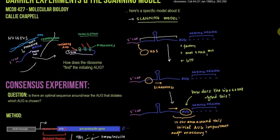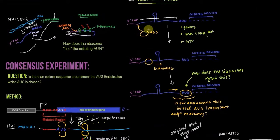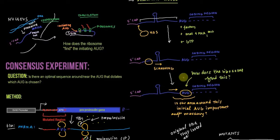And so they propose the scanning model. The 4DS subunit comes to the 5' cap, and in conjunction with factors, with met-tRNA initiating methionine, and also with GTP, it scans down — sliding from the cap to the initiating AUG. The key question is how does the ribosome, or really this 4DS subunit, actually find this AUG and know to stop there?